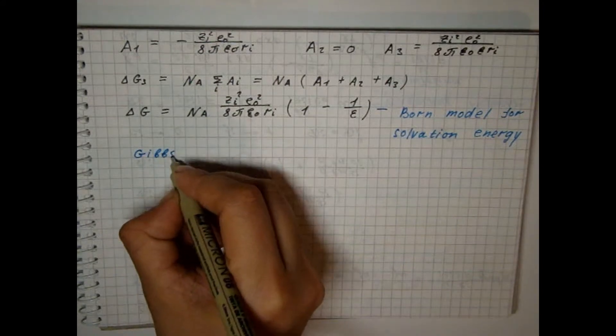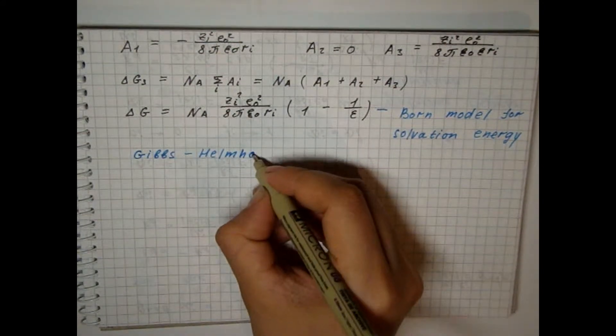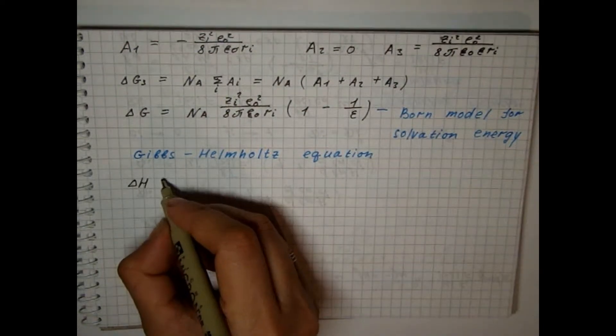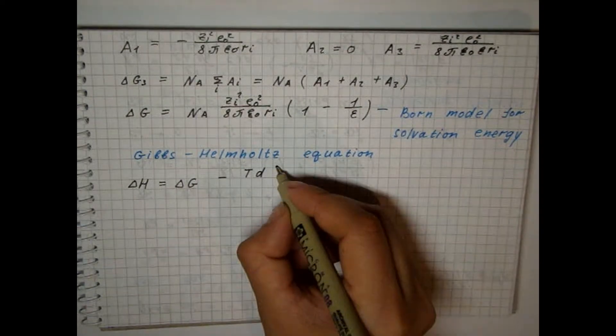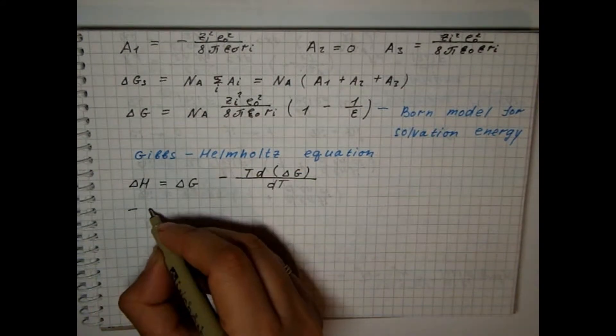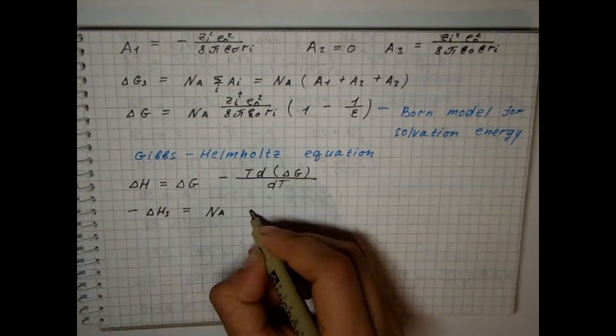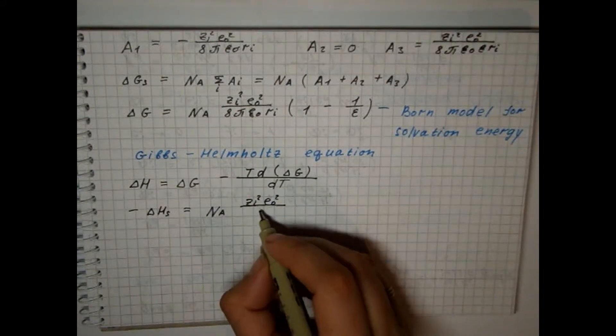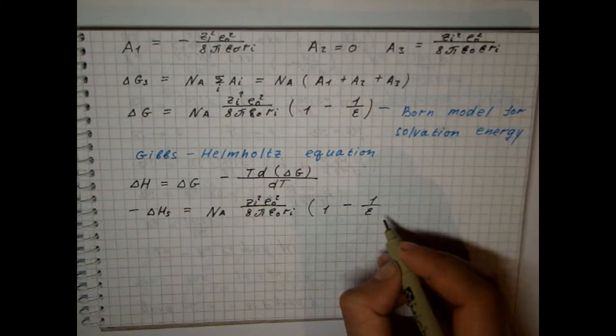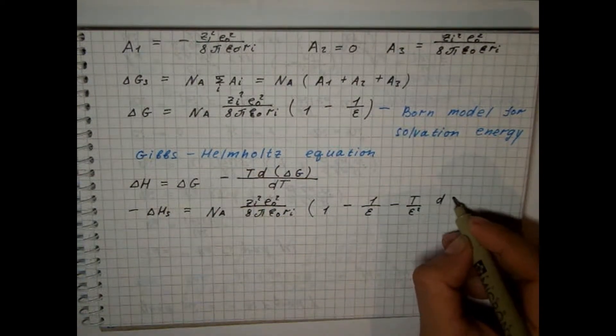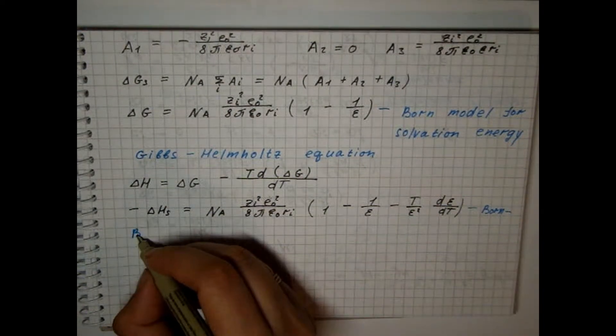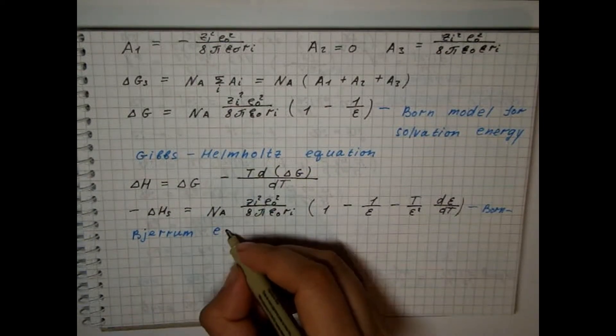If we use the Gibbs-Helmholtz equation, we can also obtain the expression of solvation enthalpy, which is also called the Born-Bjerrum equation.